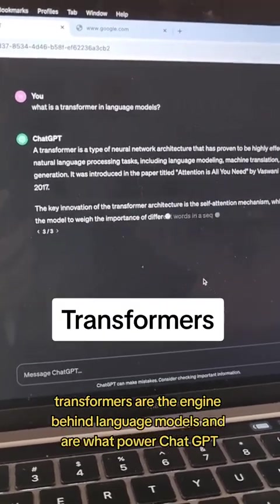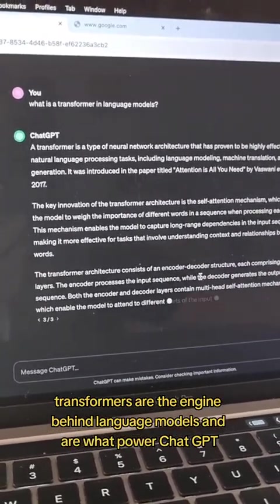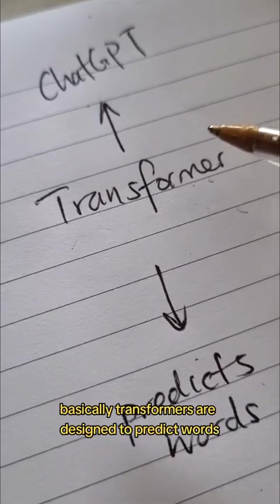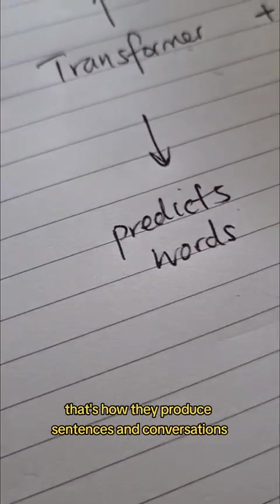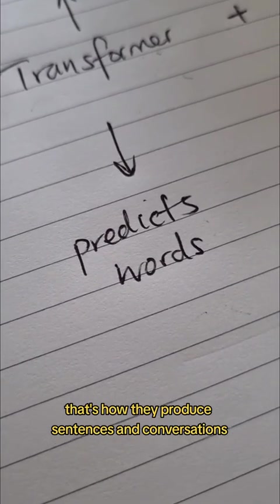Transformers are the engine behind language models and are what power ChatGPT. Basically, transformers are designed to predict words. That's how they produce sentences and conversations.